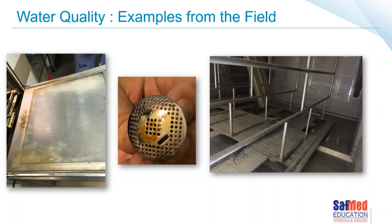These are pictures taken in the field over the years of the inside of some automated washer disinfectors. The picture in the middle is actually the drain sieve from an ultrasonic cleaner — there's a build-up of grime. On the left is a really grimy build-up of heaven-only-knows-what substrates within the chamber of a washer disinfector because of really challenging water quality — in that sieve we even found some gravel and soil. The one on the right looks more like hard water spotting from hard water minerals.